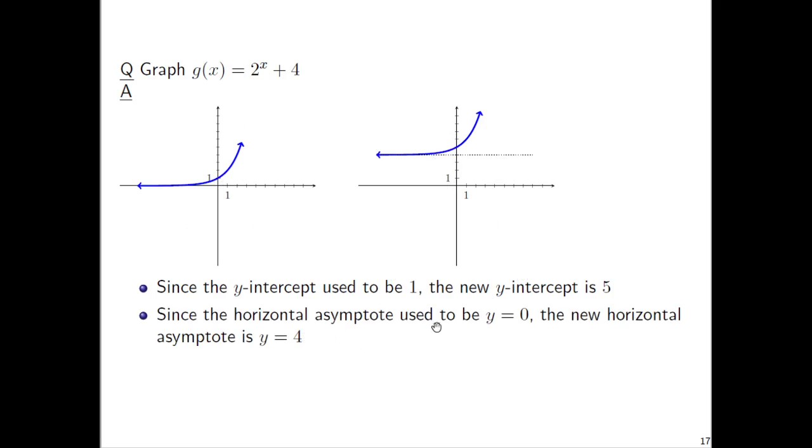And then the horizontal asymptote used to be y equals 0, so the new horizontal asymptote is y equals 4.